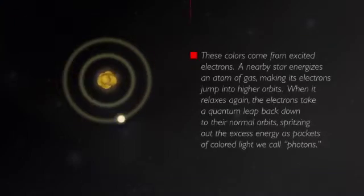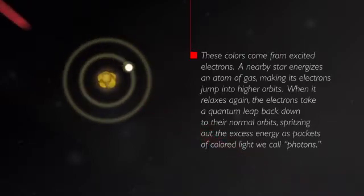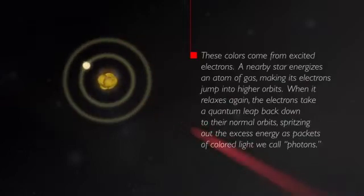These colors come from excited electrons. A nearby star energizes an atom of gas, making its electrons jump into higher orbits. When it relaxes again, the electrons take a quantum leap back down to their normal orbits, spritzing out the excess energy as packets of colored light we call photons.